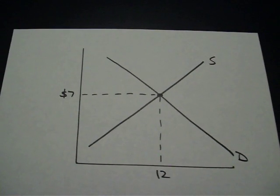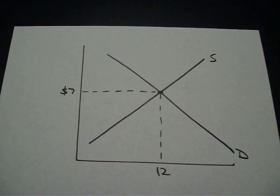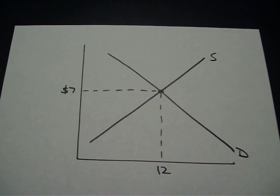So we're going to look at supply and demand with a tax. We've got supply and demand set up, equilibrium price is $7, equilibrium quantity is $12.